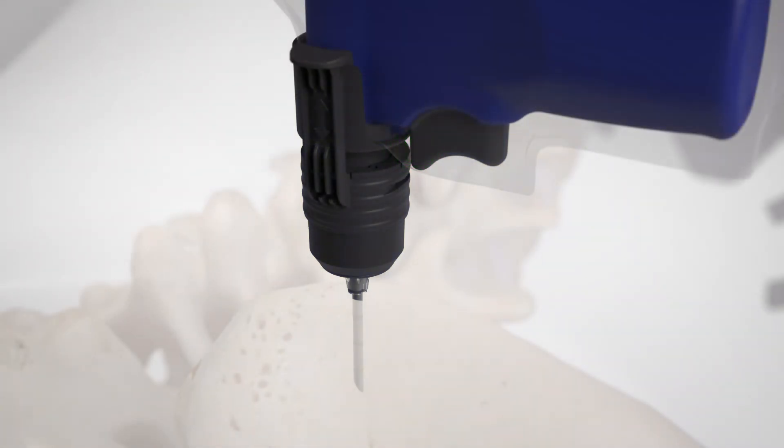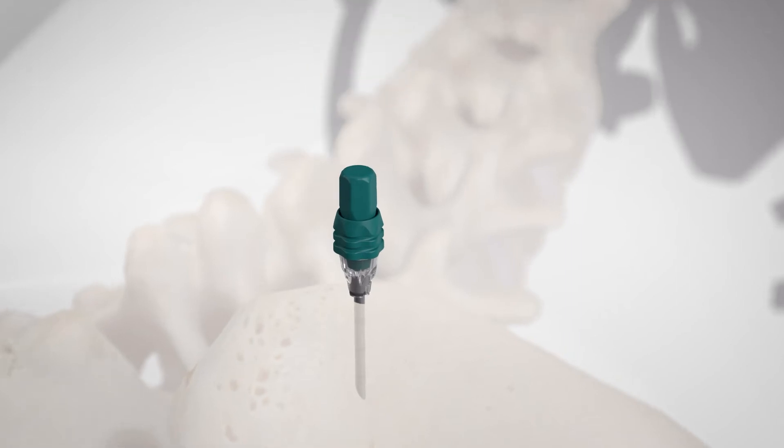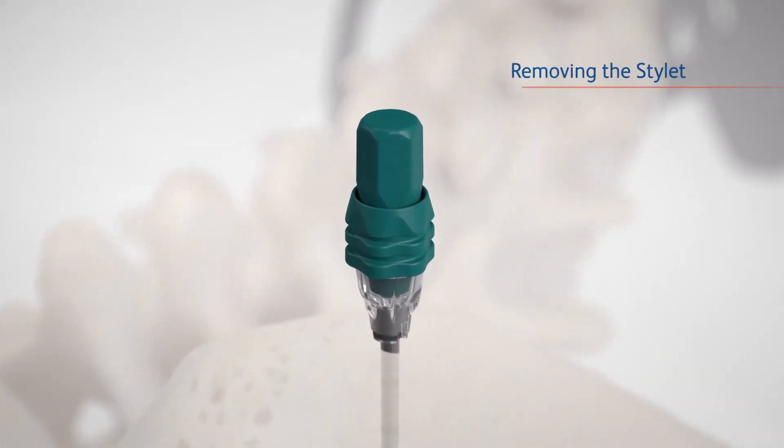To disconnect the power driver, push the release arm forward and pull the driver away from the needle hub. Remove the stylet by turning the stylet hub counterclockwise and remove, leaving the introducer cannula in place.